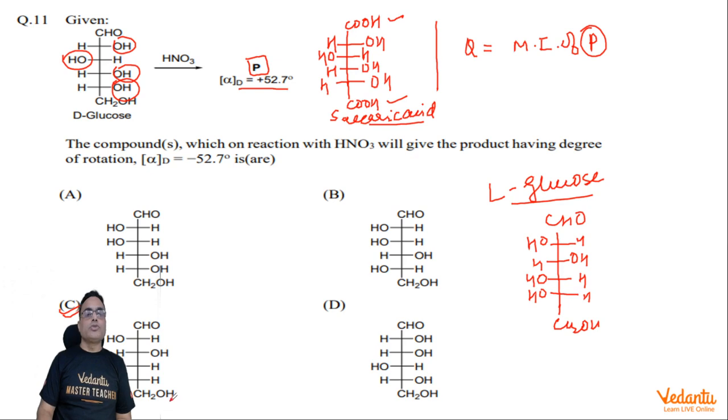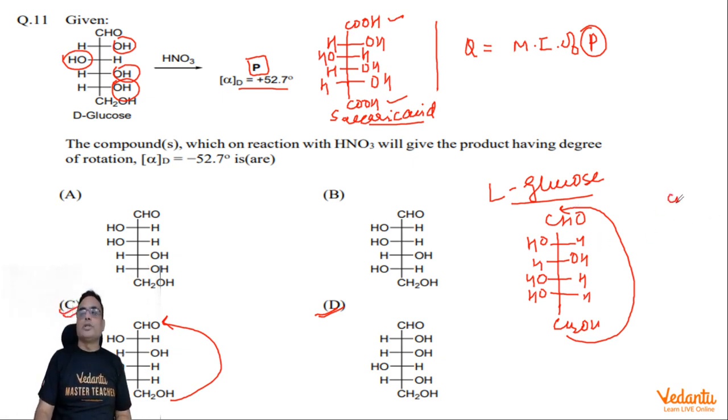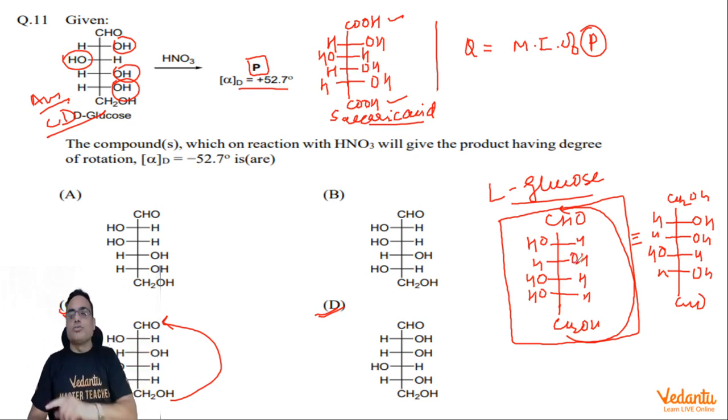Now, structures C and D are actually identical. If you rotate structure D 180 degrees upside down, the two structures become the same. So the answer to this question will be options C and D. Very simple question. Please stay tuned for the next question.